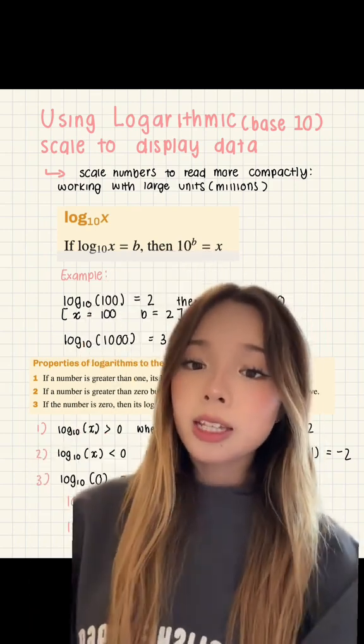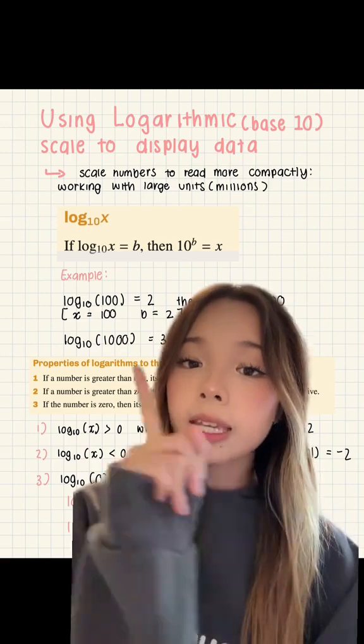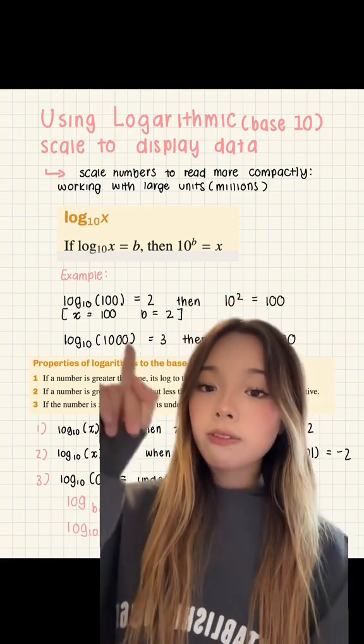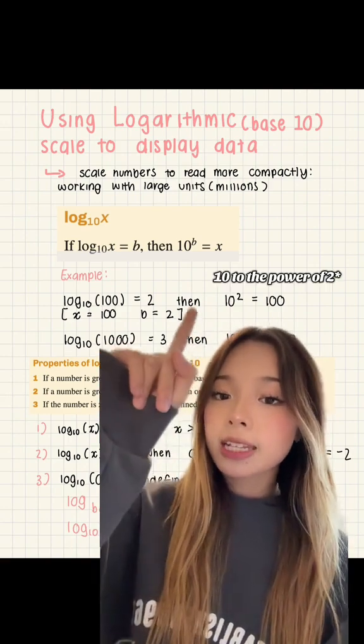So the formula we use here is if log 10x equals b, then 10 to the power of b equals x. For example, if log 10 of 100 equals 2, then 10 to the power of 2 equals 100.